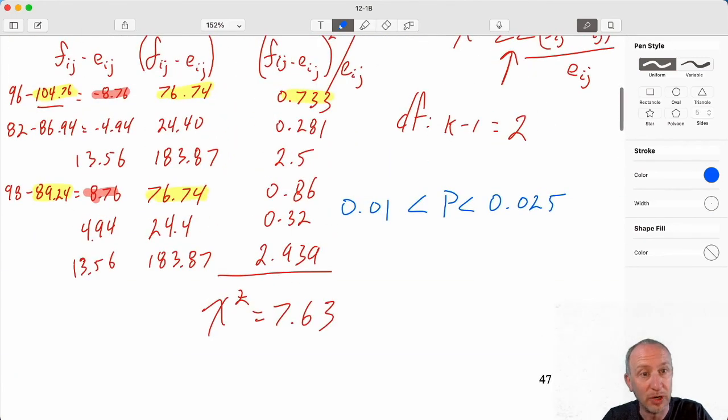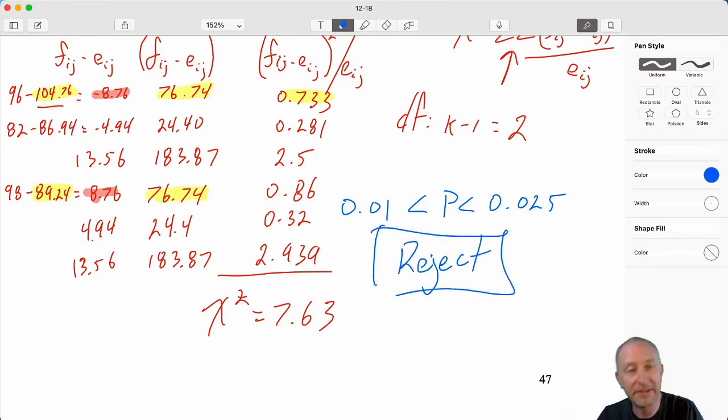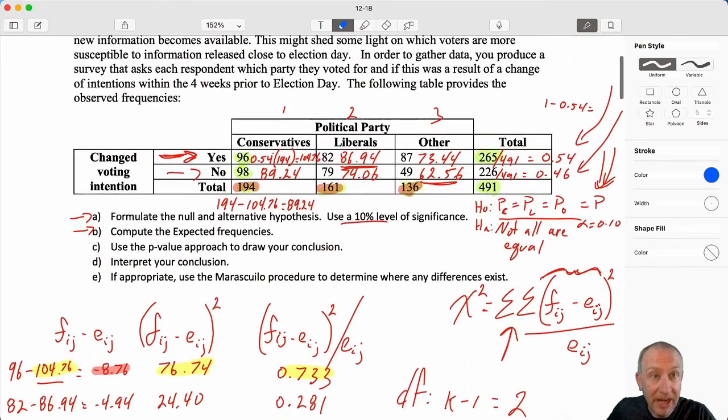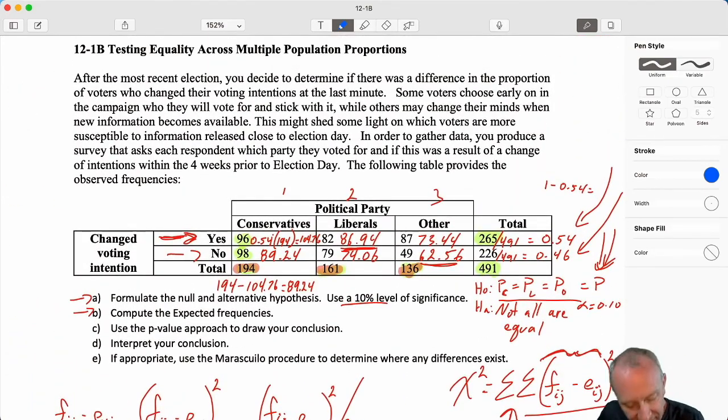So what do we find? Both of these approaches, as always, give us the same conclusion. We do have evidence here to reject the null hypothesis. We have evidence to show that not all of these proportions are equal, meaning at least one group, either those who support the conservatives, the liberals, or others, the proportion of voters who change their voting intentions within four weeks is different for at least one of those different groups, one of those different political affiliations.